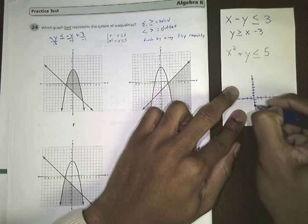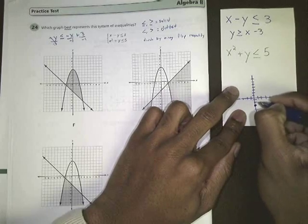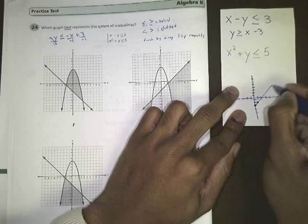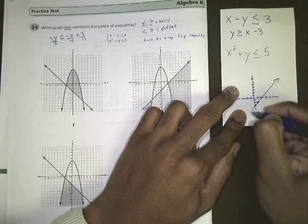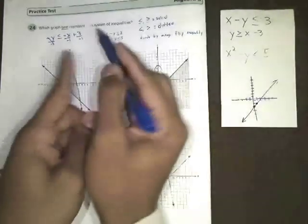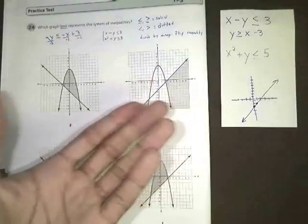And then from negative 3, we need to go up 1 over 1, and then connect that with a solid line. So it's going to look something like this. And then we need to figure out which side of this line we need to shade to, because it's an inequality.